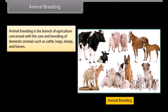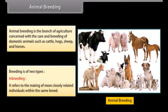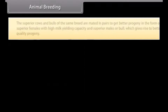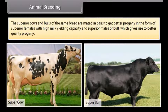Animal breeding is the branch of agriculture concerned with the care and breeding of domestic animals such as cattle, hogs, sheep and horses. Breeding is of two types. Inbreeding refers to the mating of more closely related individuals within the same breed. The superior cows and bulls of the same breed are mated in pairs to get better progeny.